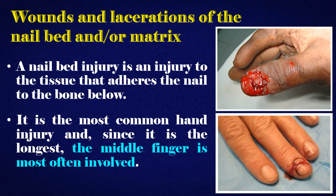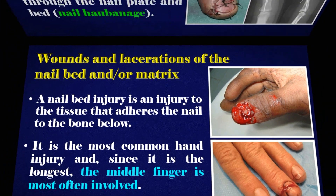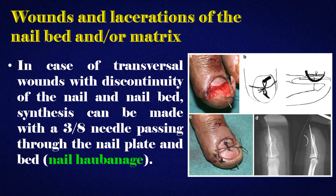Wounds and lacerations of the nail bed and/or matrix: a nail bed injury is an injury to the tissue that adheres the nail to the bone below. It is the most common hand injury and, since it is the longest, the middle finger is most often involved. In case of transversal wounds with discontinuity of the nail and nail bed, synthesis can be made with a 3-8 needle passing through the nail plate and bed.